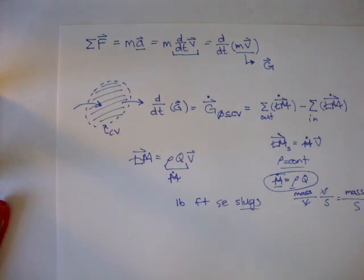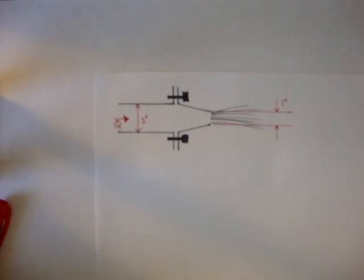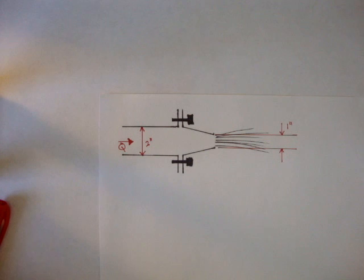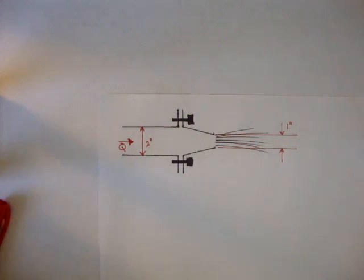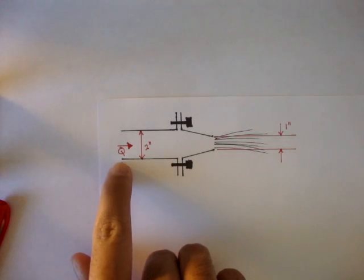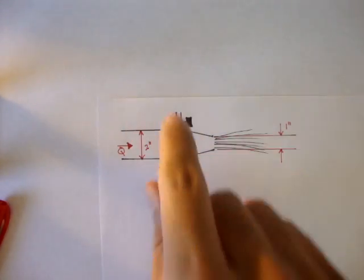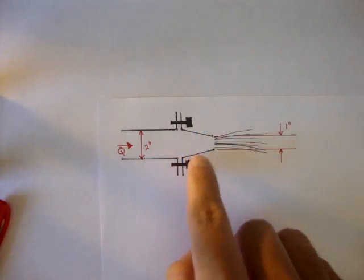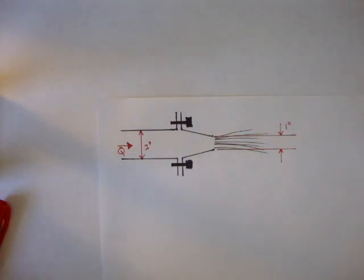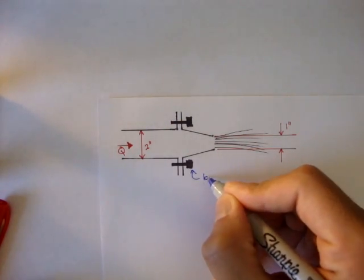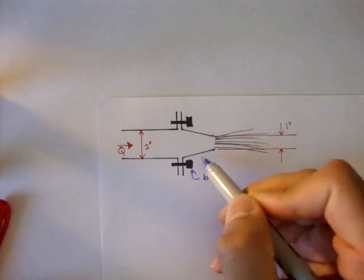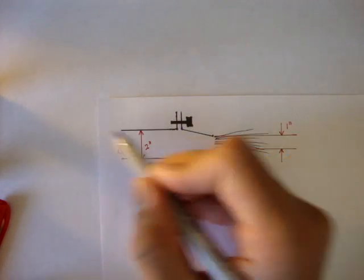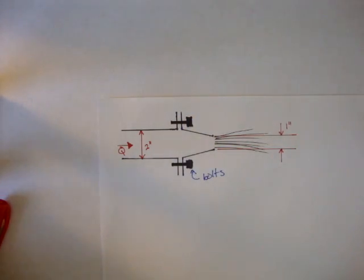Alright, so let's go into an example. I have one right here. And let's explore this concept of linear momentum and how we can use it. So here we have a tube or a pipe coming in, and here we have a nozzle attached, and these two things here are bolts.